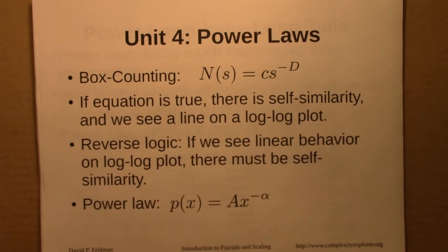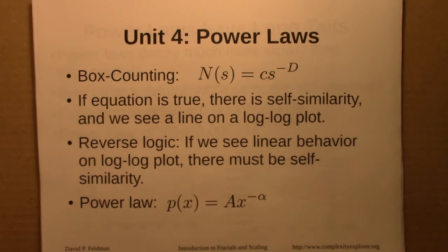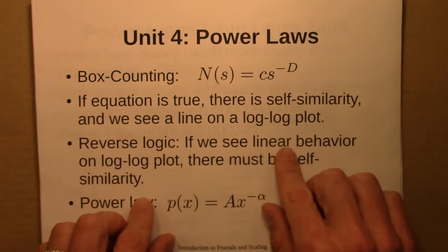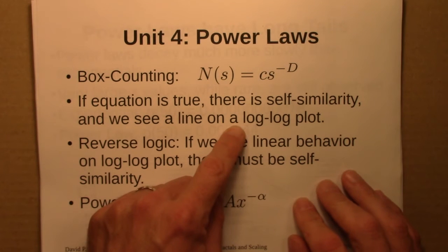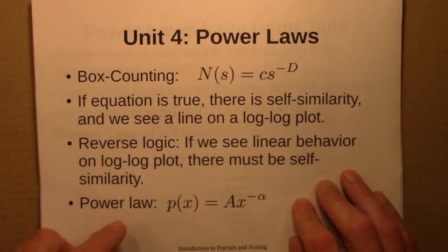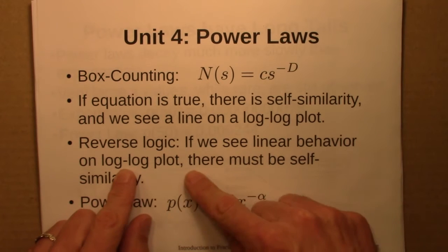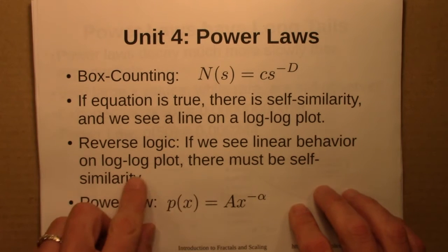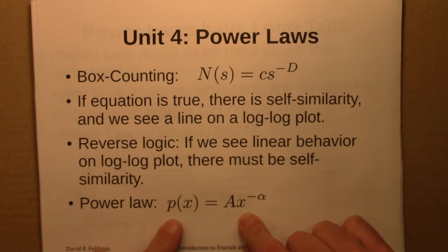Then in Unit 4, we got a little more abstract. We'd been talking about physical fractals — ferns, Sierpinski triangles, Koch curves. But looking at the mathematics more abstractly, box counting led us to an equation, and if that equation is true, there's self-similarity and we see a line in a log-log plot. So we reversed that logic: if we're looking at some other phenomenon and we see linear behavior in a log-log plot, that's an indication of self-similarity. Mathematically, the general form for a power law is p(x) = a·x^(−α).